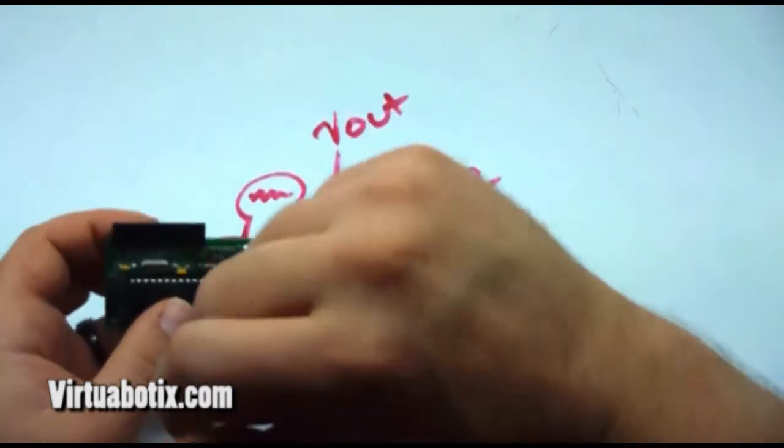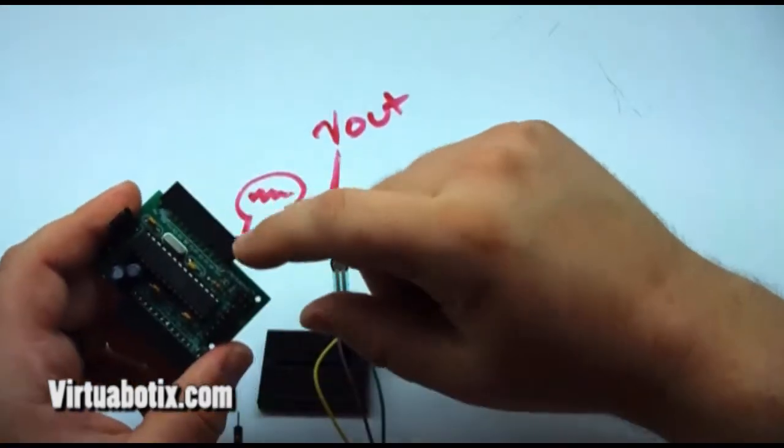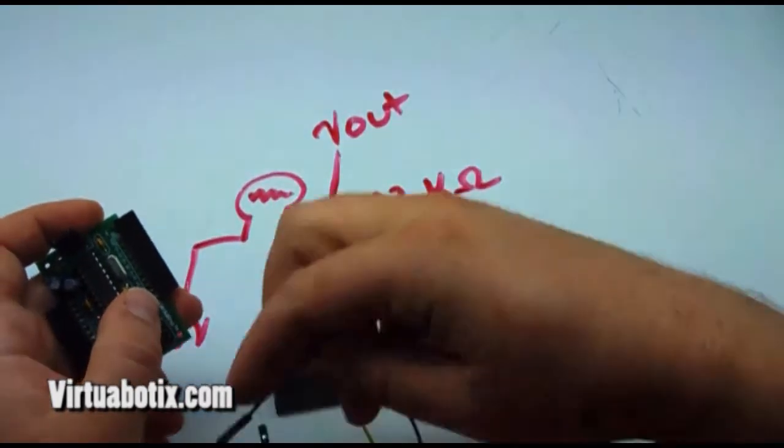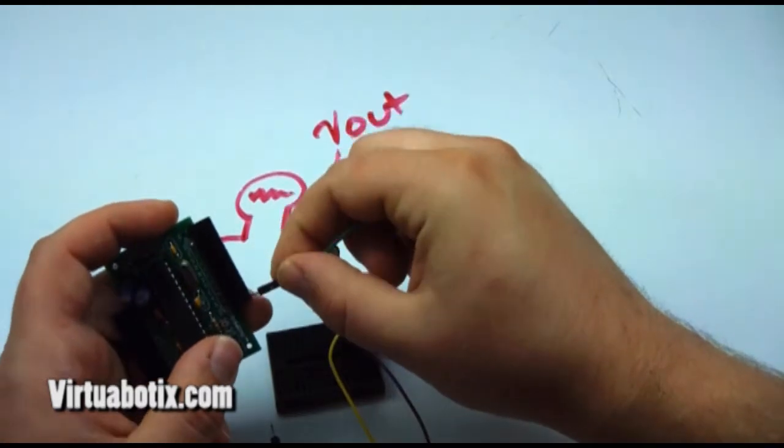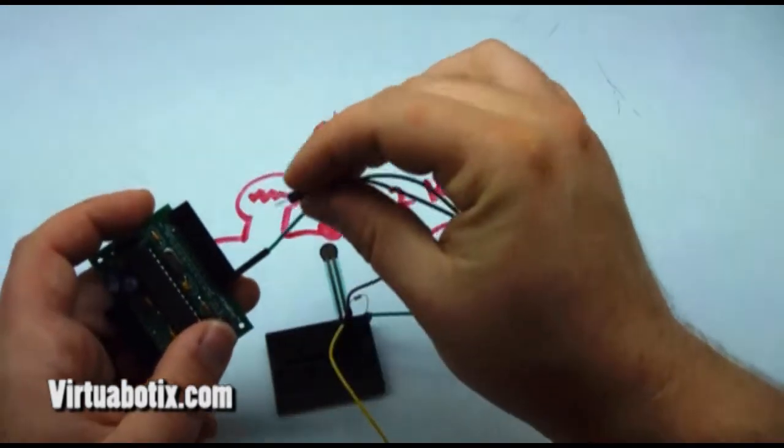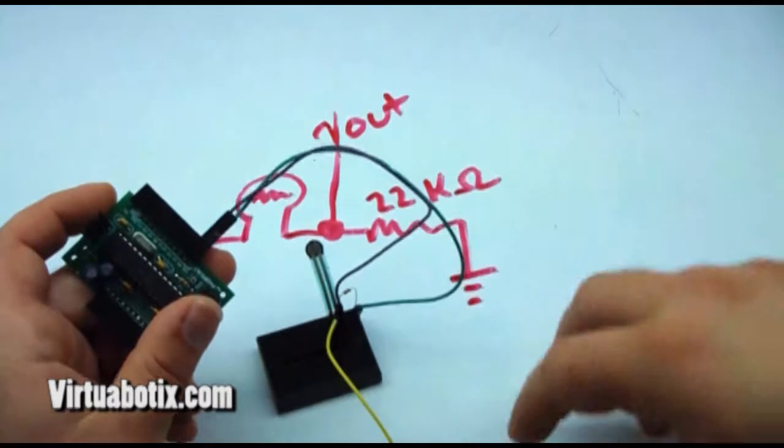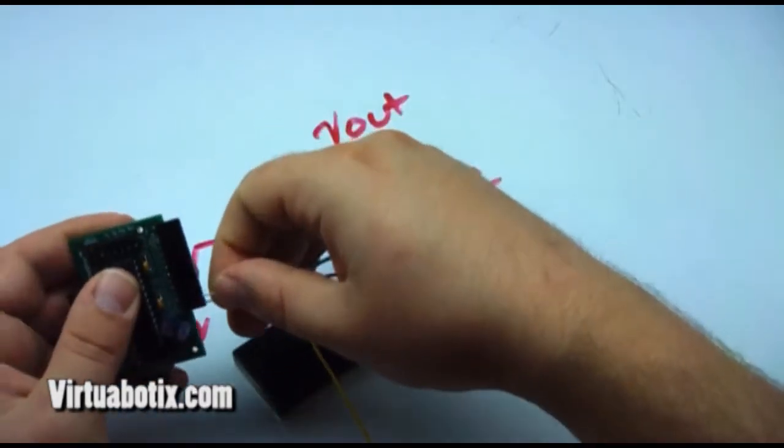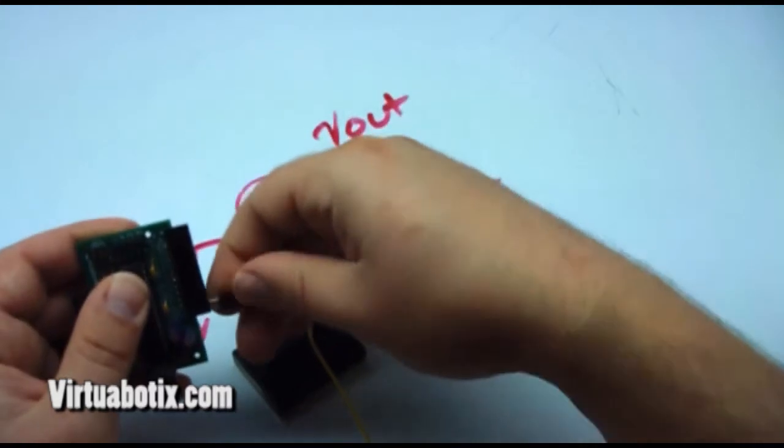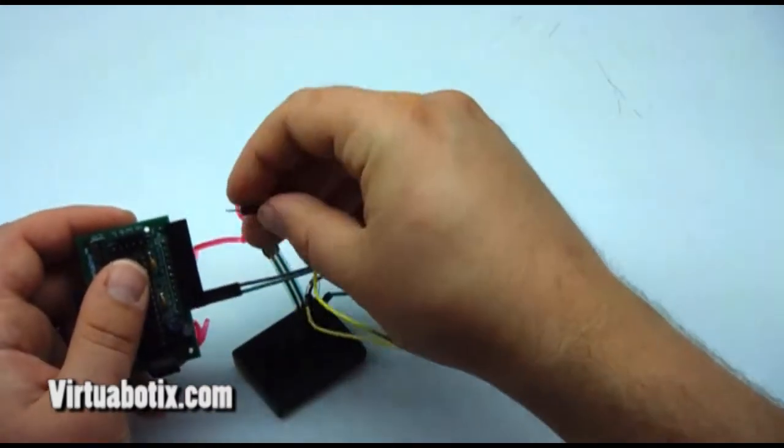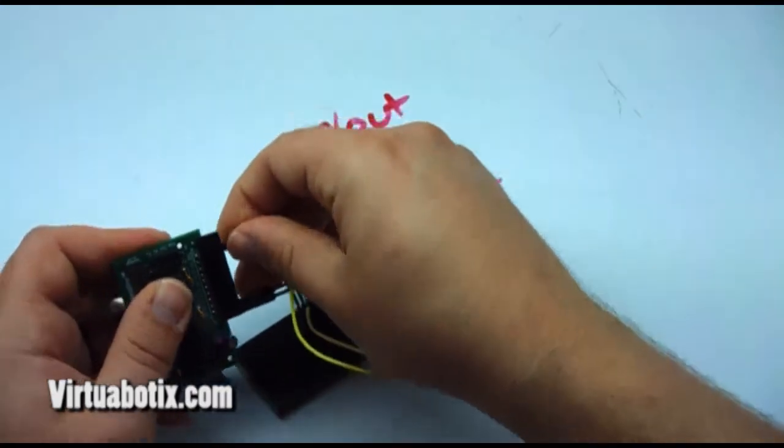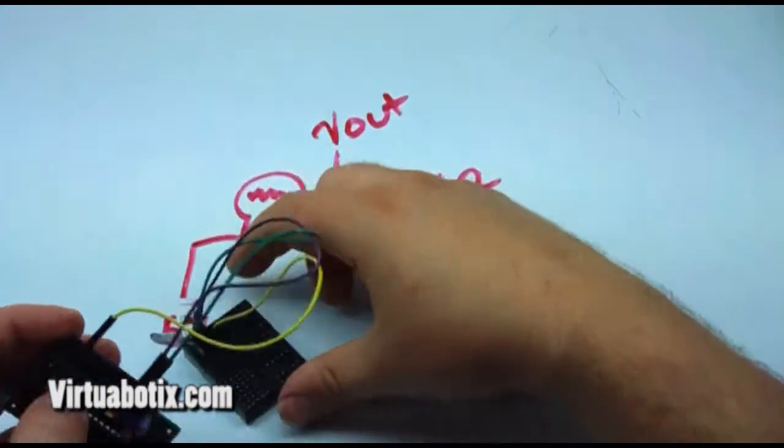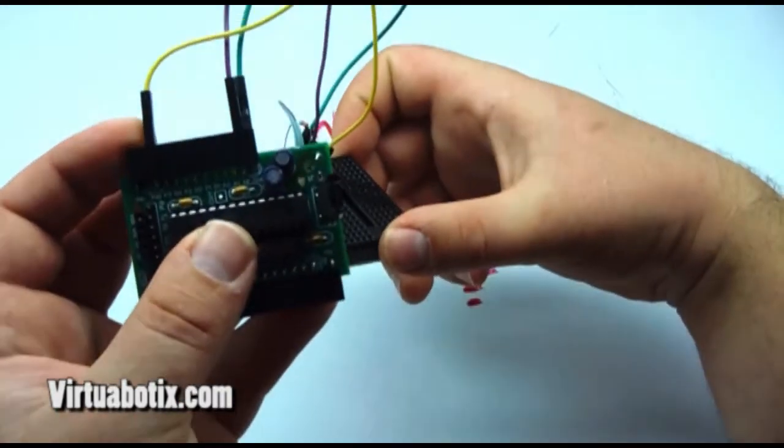So now on the Versalino you've got your ground down here. Got your output. We're going to put on analog pin 0. Actually let's do bus A. So bus A ground, Analog 0, and VDD right there. So we're all set up.